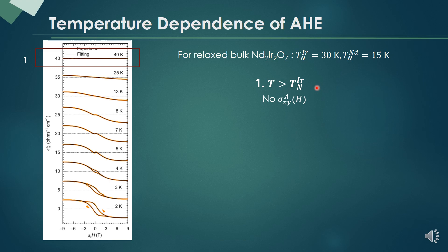In the first region, over 30 Kelvin, there is no anomalous Hall conductivity at all.